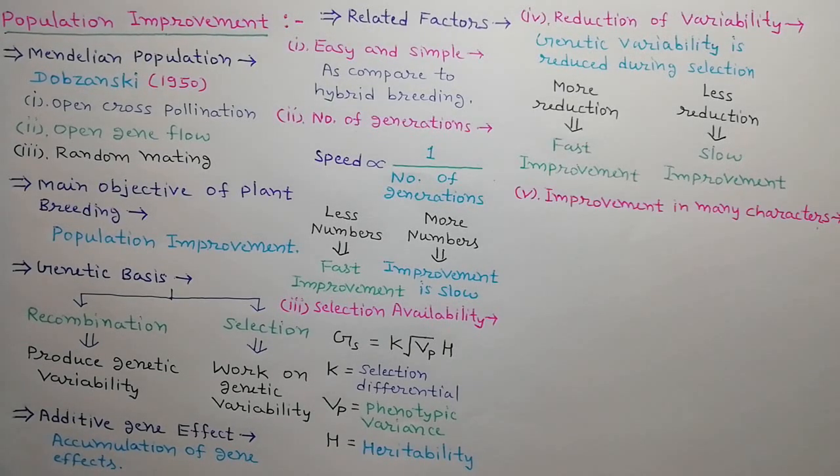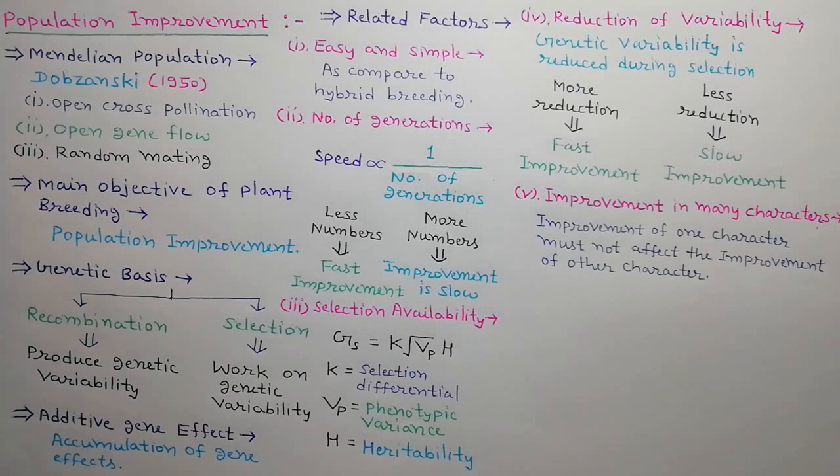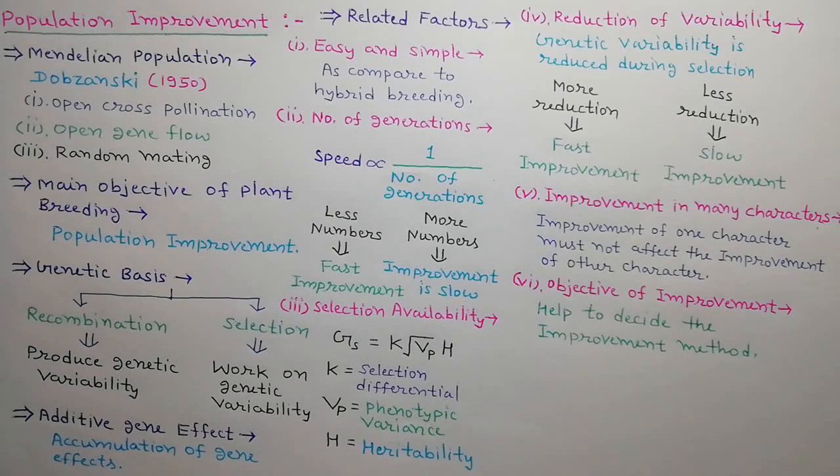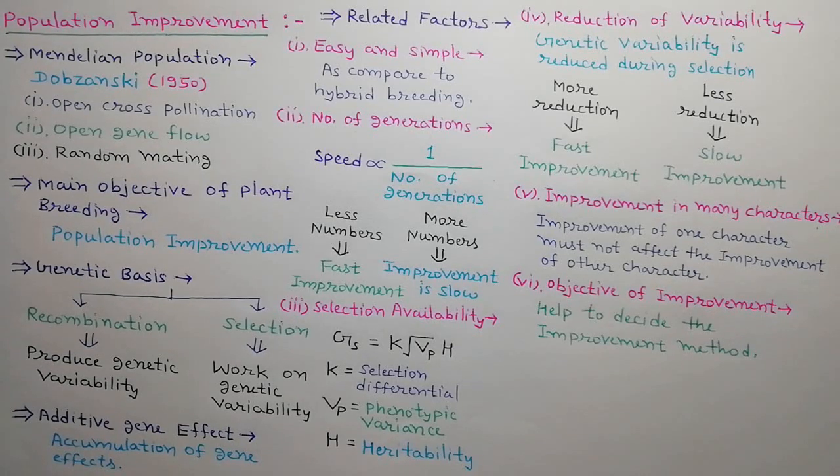Next factor is improvement in many characters. During population improvement, many desired characters are improved simultaneously, so that improvement of one character must not affect the improvement of another character. Next factor is objective of improvement. Selection of improvement method depends on the objective of improvement.